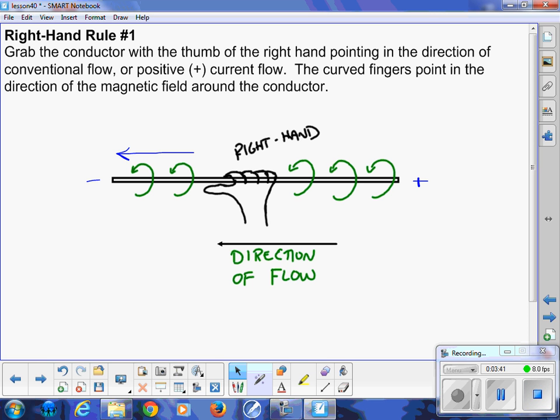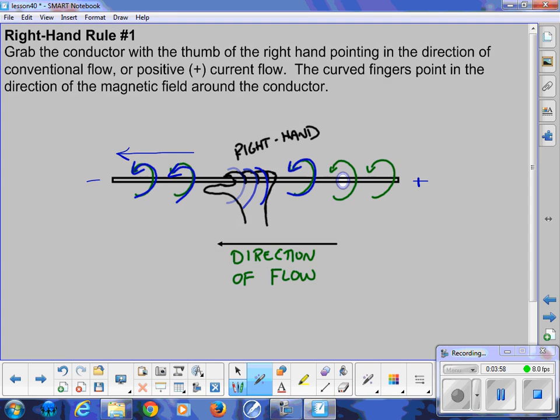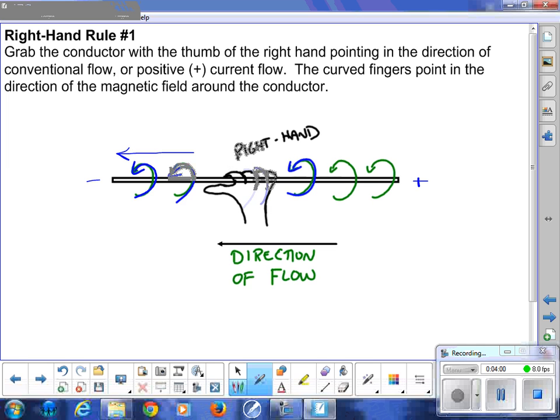Right hand rule: thumb points with the right hand and you grab that wire. And again, don't grab a live wire, it's just theoretical. Your fingers curl in the direction of the magnetic field. It's going up and over. So there we go, there is our first right hand rule.